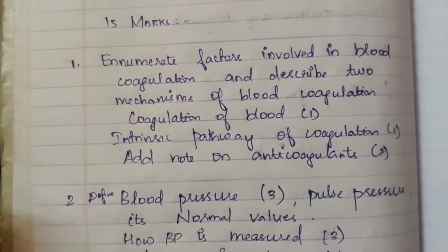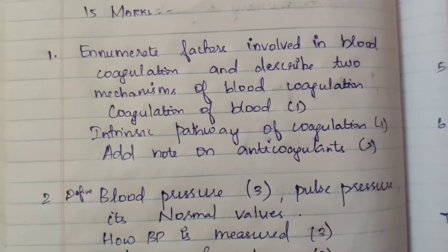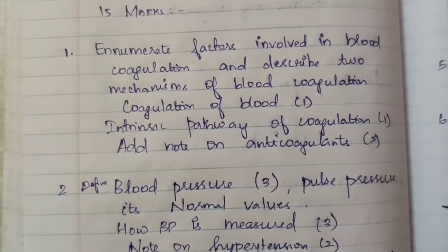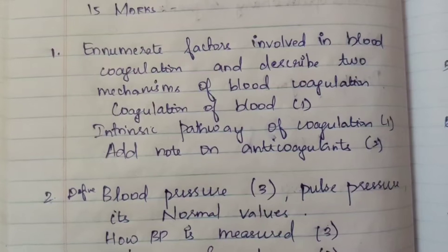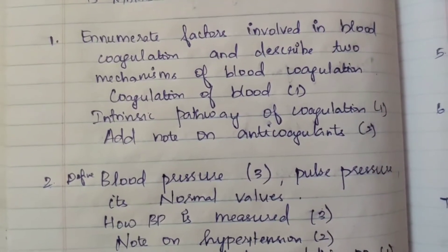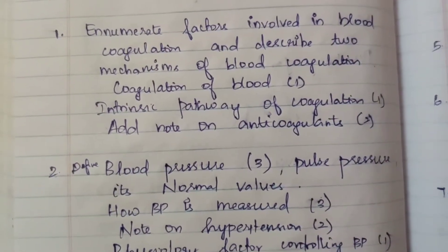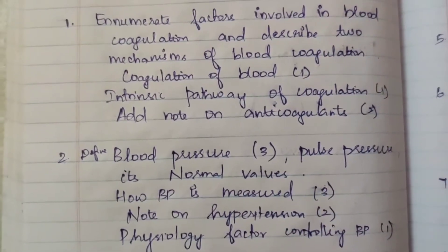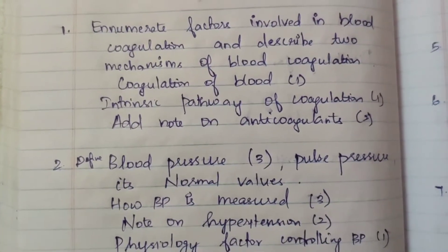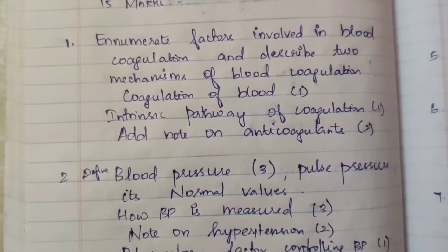First question, 15 marks: enumerate factors involved in blood coagulation and describe two mechanisms of blood coagulation. In 5 marks: coagulation of blood; here is the intrinsic pathway of coagulation. Also, add a note on anticoagulants — that is 5 marks. The anticoagulants question appears two times. Coagulation of blood is one complete topic.